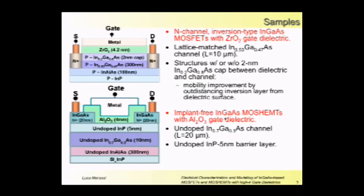With the second kind of devices - MOSHEMTs with alumina gate dielectric and a 5 nanometer barrier of indium phosphide - we use this device to evaluate the errors affecting the split-CV technique for mobility extraction.